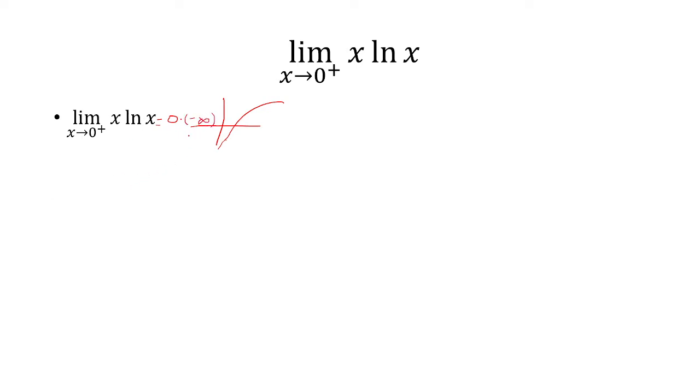The trick to handling this is to get it in the form of infinity over infinity or 0 over 0. So we can either have x over 1 over ln of x, or ln of x over 1 over x.